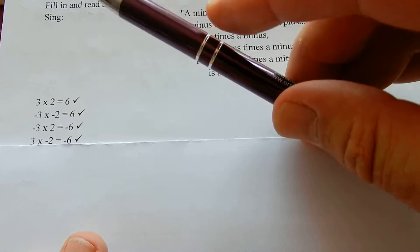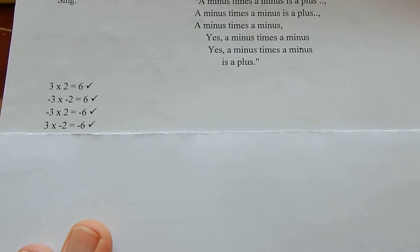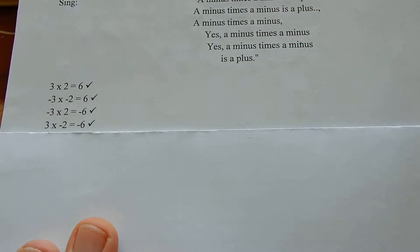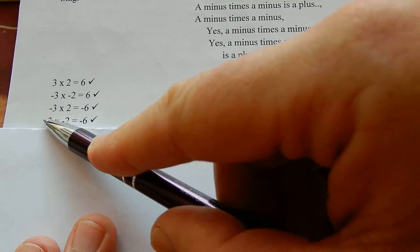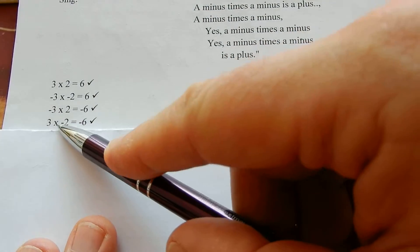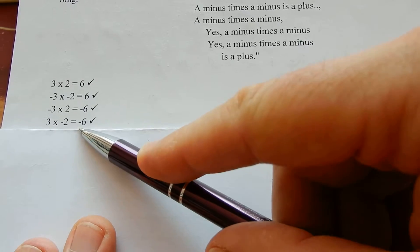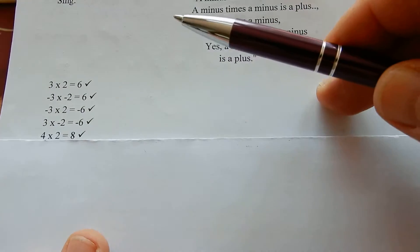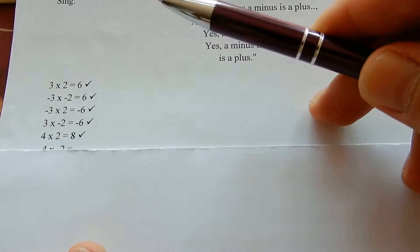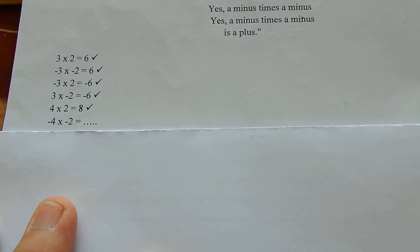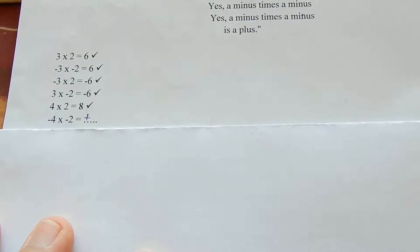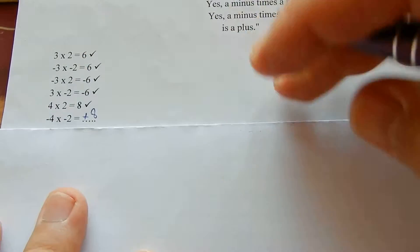If there's only one minus — the first number or the second number. If it's an odd number of minuses multiplying together, like 1 is an odd number, then you get a minus. 4 times 2 is 8. Minus 4 times minus 2 — that's an even number of minuses. One minus gets together with the other minus when multiplying, to make a plus: plus 8.